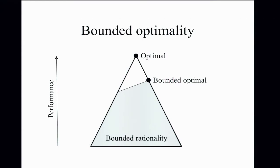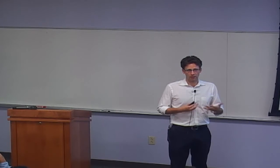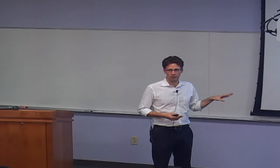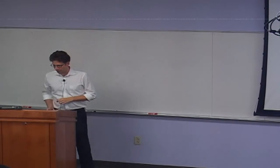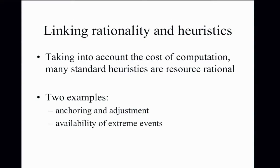We can use bounded optimality as a guide to making generalizable models of human cognition. The question is: how close are we to strategies that are actually good? Do results about how people make decisions tell us we're fundamentally irrational, or instead that we're pretty good at solving what turn out to be quite complex problems? We've pursued this in the context of classic tasks used to argue against human rationality, and results fall on the side of people being pretty good.